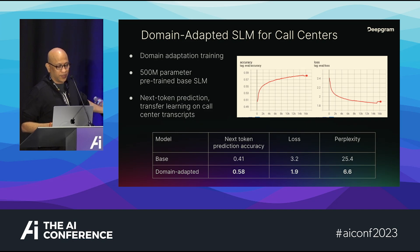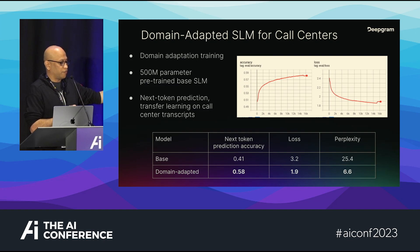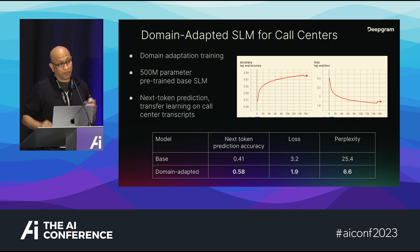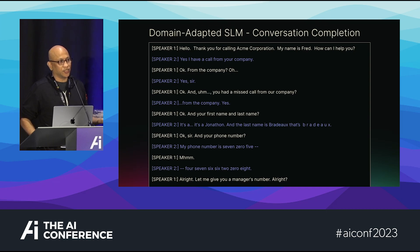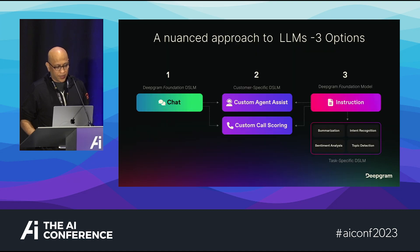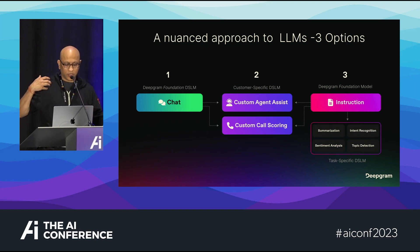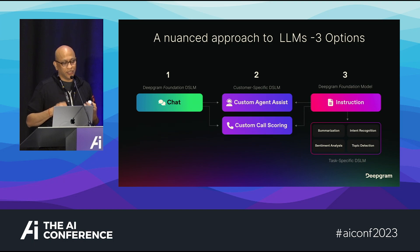We adopted a domain-adapted language model. The domain-adapted model performs much better on prediction accuracy, on loss, and on perplexity — which is another way of measuring prediction accuracy. The domain-language model conversation summary is more realistic; it's actually understanding what's going on. We concluded that you need instruction models, chat models, customer-specific domain models, and distilled step-by-step models.